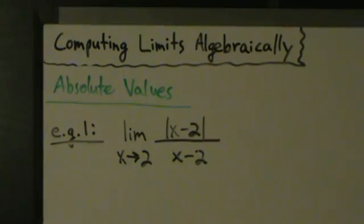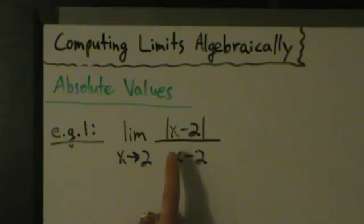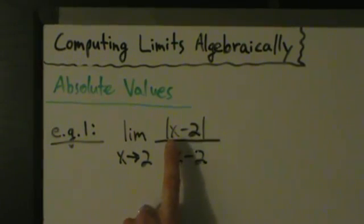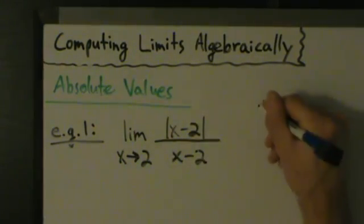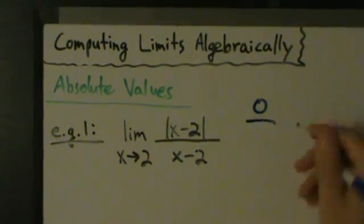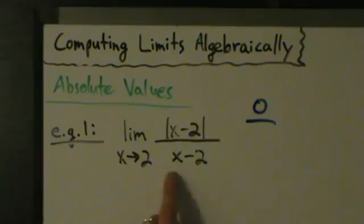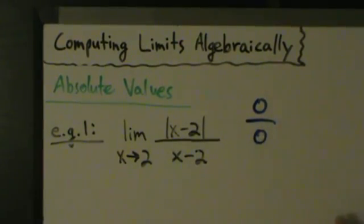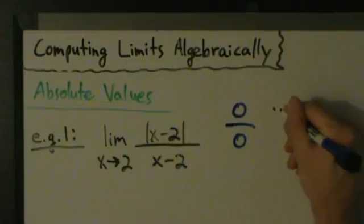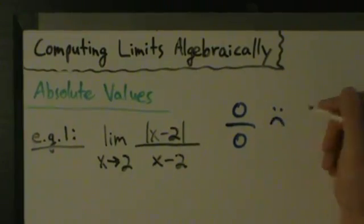So, as always, the first thing we should try is direct substitution. What happens when we do that? On the top, put in 2 for x, and we have 2 minus 2, which is 0. Absolute value of 0 is still 0. So we have 0 on the top. On the bottom, 2 minus 2 is also 0. So we end up with 0 over 0, which, as usual, makes us sad.